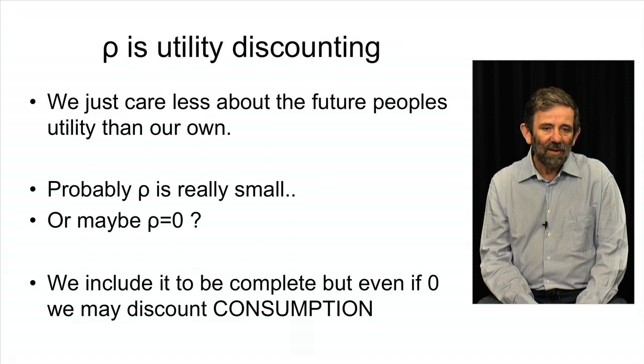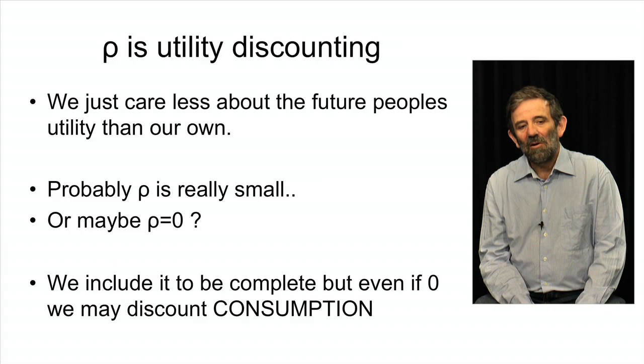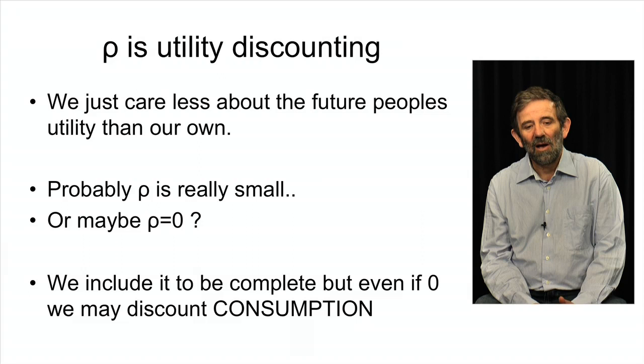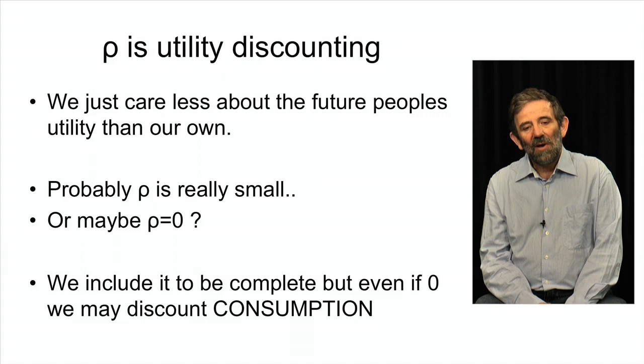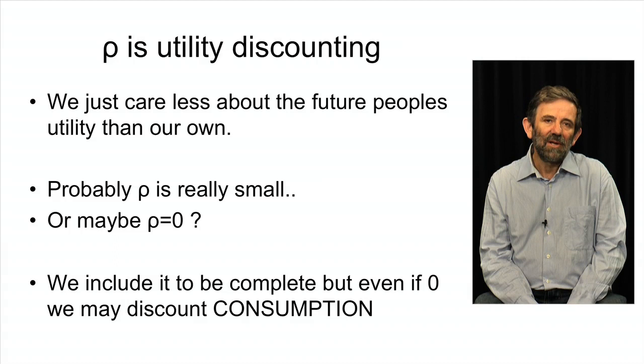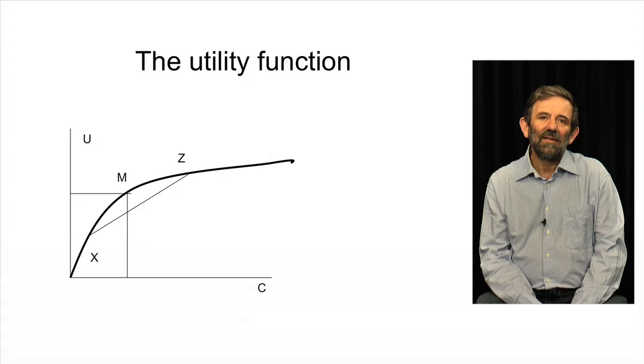In fact, if you like, you can think of it as being zero, but we're going to include it here since there are many people who think that it still exists, and it's important that our mathematical treatment is complete. But the fact is that even if we think that ρ should be zero, there may still be reasons for discounting. And the reason for that is that the utility curve is not straight.